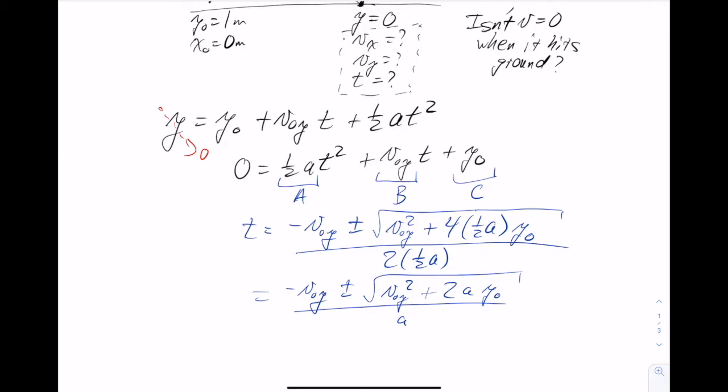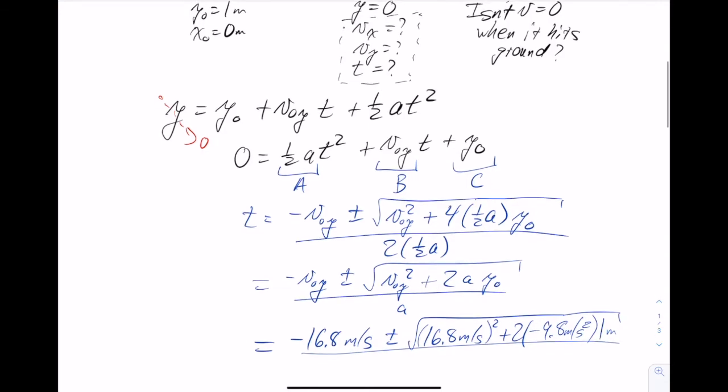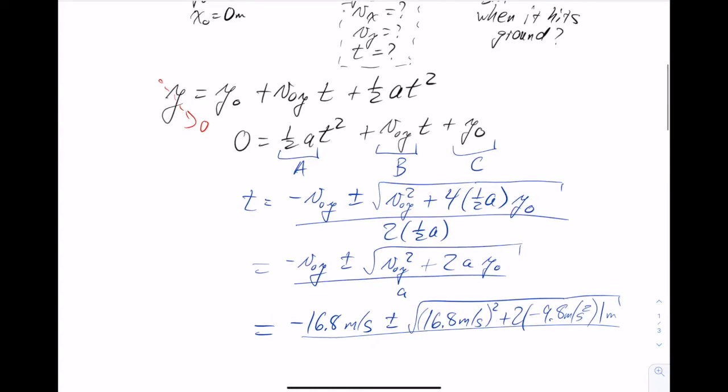And then I can plug in my known values here, so that's going to be negative 16.8 meters per second, plus or minus the square root of 16.8 meters per second quantity squared, plus 2 times, now remember g is negative, or sorry, the acceleration is negative g, so it's negative 9.8 meters per second squared, times 1 meter, which was our y0. And that's all divided by 2 times, no, not 2 times, just negative 9.8 meters per second squared.